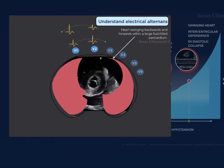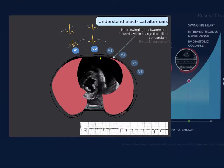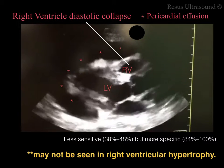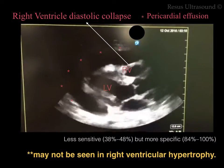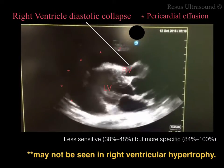Another sign — which is fairly easy to recognize without much ultrasound knowledge — is swinging heart: the heart moves back and forth, causing the voltage on ECG to go up and down alternately. This happens because the ECG leads are fixed while the heart moves forward and backward, resulting in electrical alternans. If you see electrical alternans on ECG, remember to think of swinging heart.